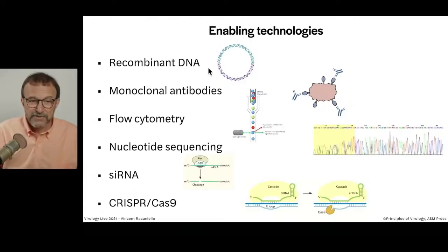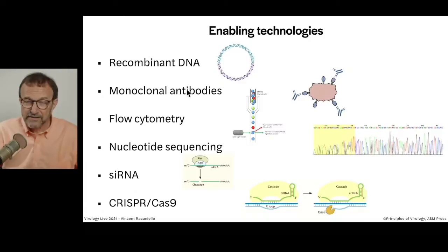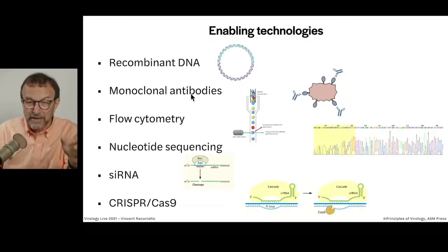The development of monoclonal antibodies was another enabling technology. We didn't always know how to make monoclonal antibodies — that is, an antibody against one epitope of a protein. An epitope refers to a small sequence of amino acids in a protein that is recognized by an antibody. Monoclonals are specific for one sequence, and so this allows us to detect receptors on the surface of cells.